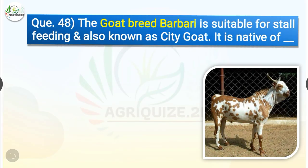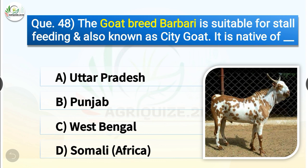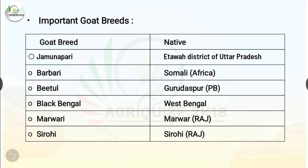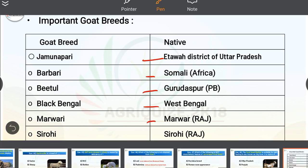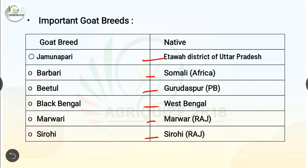Question number 48. The goat breed Barbari is suitable for stall feeding, also known as City Goat, and it is native of dash. The options are Uttar Pradesh, Punjab, West Bengal or Somali Africa. The correct answer is option D, Somali Africa. So Barbari is native of Somali Africa. Regarding important goat breeds: Jamunapari is native to Etawah district of UP; Barbari is native to Somali Africa; Beetal is native to Gurdaspur, Punjab; Black Bengal is native to West Bengal; Marwari is native to Marwar, Rajasthan; and Sirohi is native to Sirohi, Rajasthan.